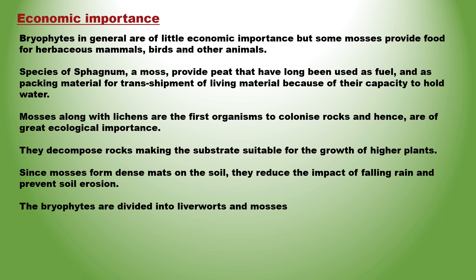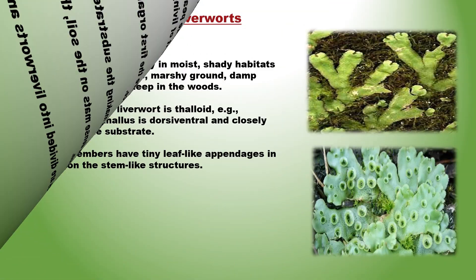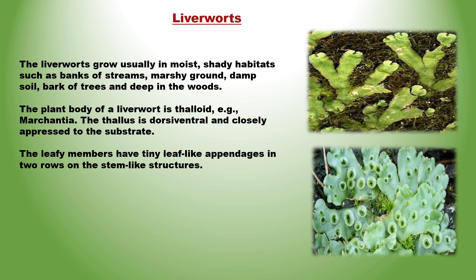Bryophytes को liverworts तथा mosses में बाँटा गया है। Liverworts usually grow in moist and shady habitats. The plant body is thaloid. The thallus is dorsoventrally flattened and closely attached to the substrate. Some members of the group may have tiny leaf-like appendages arranged in rows on the stem-like structure.